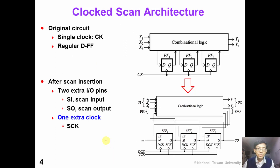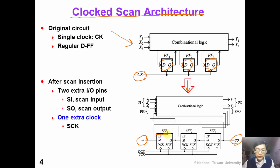This slide shows the clock scan architecture before and after scan insertion. The original circuit has only one clock and a non-scan flip-flop. After scan insertion, we have two extra I/O pins — scan input and scan output. All the flip-flops are replaced by clock scan flip-flops, and we have one extra clock, which is the scan clock SCK.